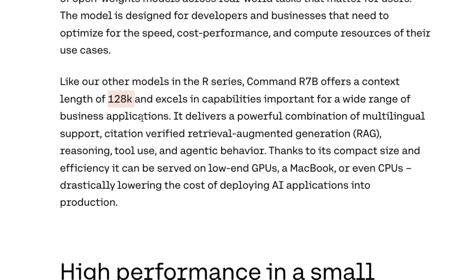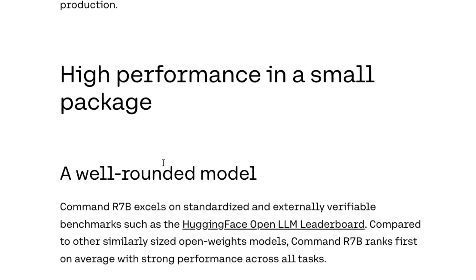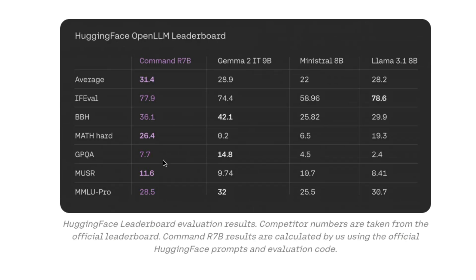Command R 7B also supports citation-verified RAG, multilingual input, tool usage, and a bunch of other features required for agents. In terms of benchmarks on the Hugging Face Open LLM Leaderboard, Command R 7B is much better than counterparts of similar size — better than Llama 3.1 8B.